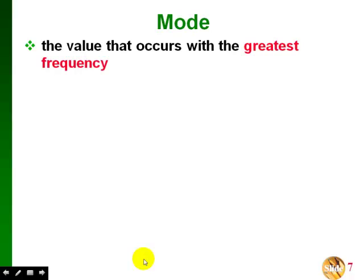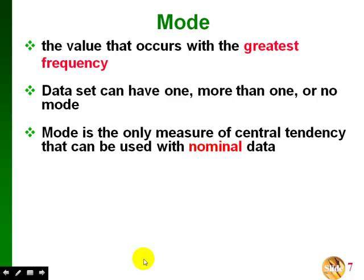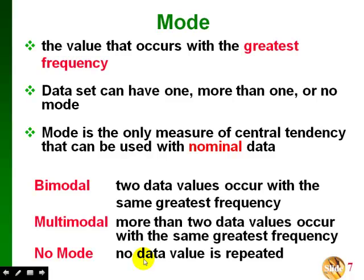The next measure of center is the mode — the value that occurs with the greatest frequency. A data set can have one mode, more than one, or no mode at all. The mode is the only measure of center we can use with nominal data. If a set is bimodal, it has two modes — two different data values occurring with the same greatest frequency. Multimodal means more than two modes. No mode means no data value is repeated.